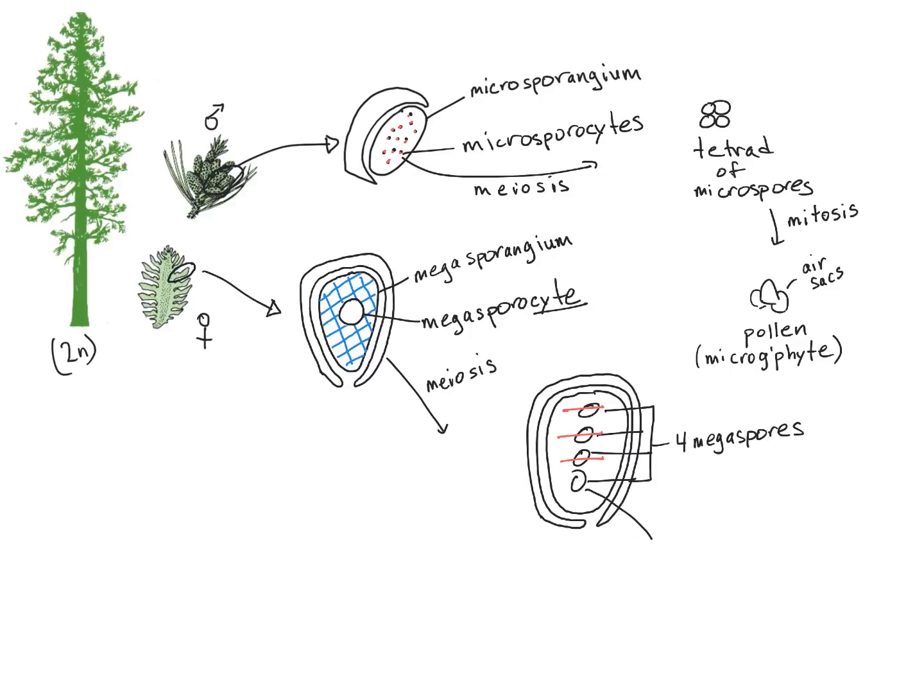So now we have the mitotic division of the megaspore, which gives us rise to our fully mature megagametophyte. One thing to keep in mind is that there are several rounds of mitosis necessary to produce the fully developed megagametophyte. The megagametophyte of gymnosperms in contrast to angiosperms is relatively large, and it holds two archegonia. So once again, I'm drawing the remains of my megasporangium, and inside we have two archegonia.